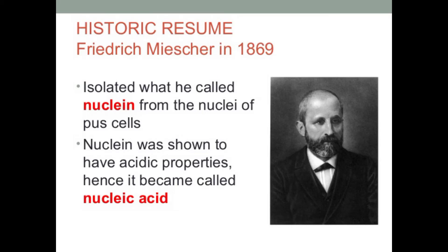Regarding the history: Friedris Miescher isolated what he called 'nuclein' from the nuclei of pus cells. This nuclein was shown to have acidic properties, and hence it became called 'nucleic acid.' This term was coined by Miescher in 1869.